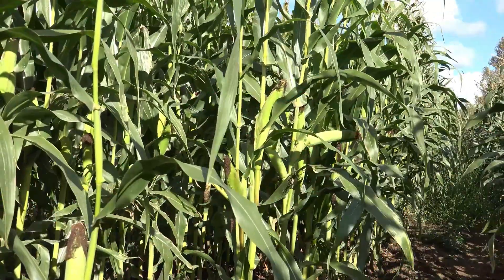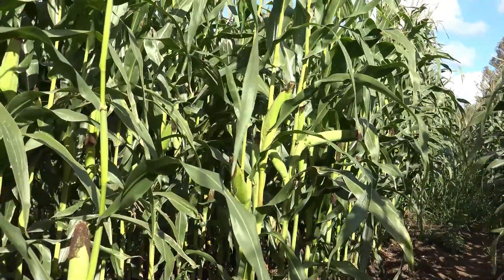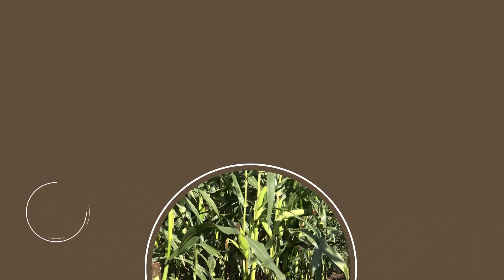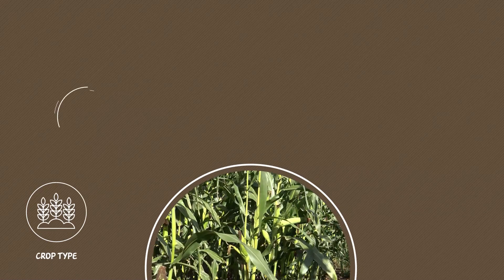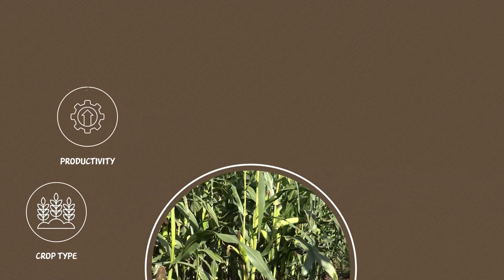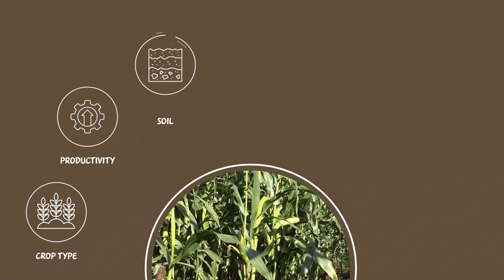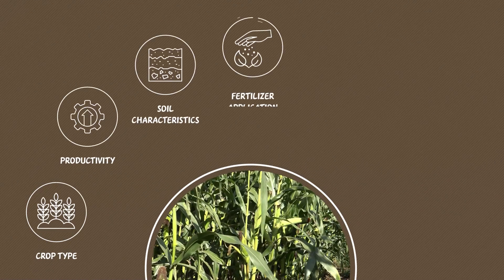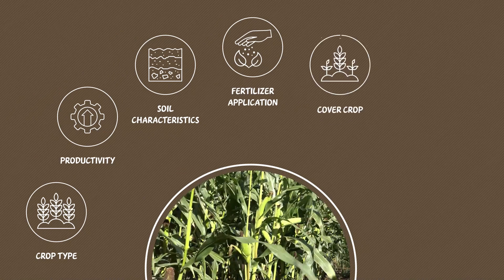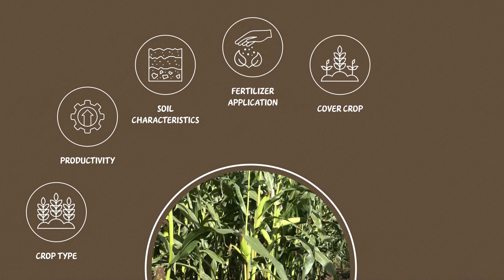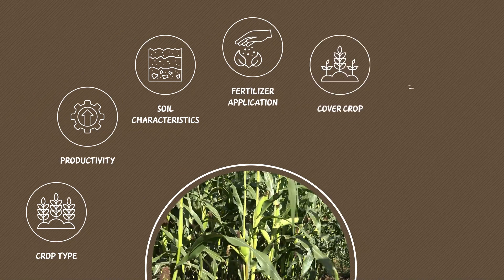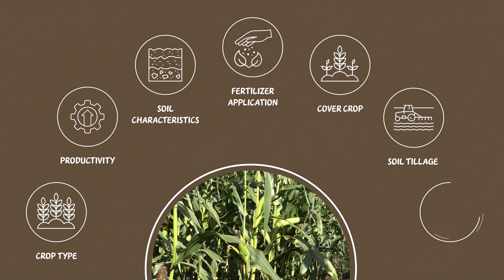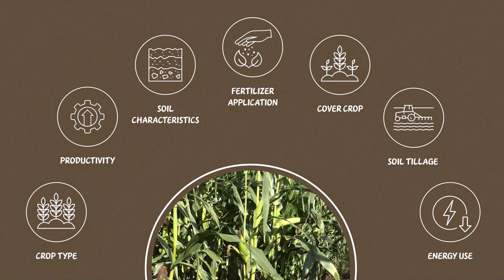In annual crops, the main parameters that determine the emissions are crop type, productivity, soil characteristics, fertilizer application, cover crop and residue management, soil tillage, and energy use.